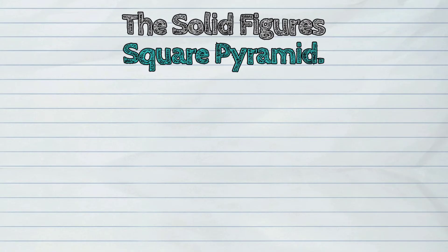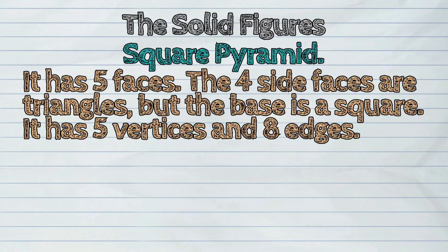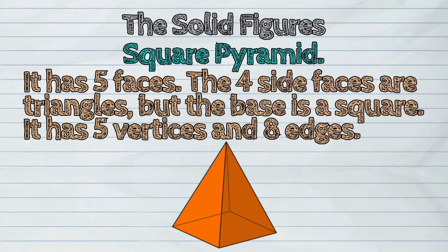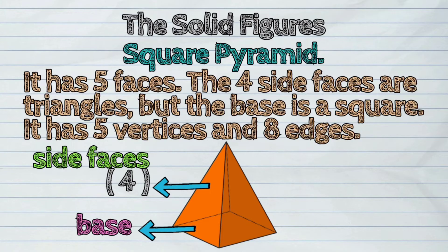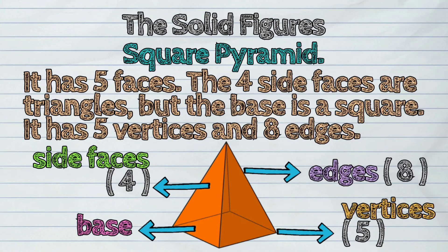Seventh, the square pyramid. It has five faces. The four side faces are triangles, but the base is a square. It has five vertices and eight edges.